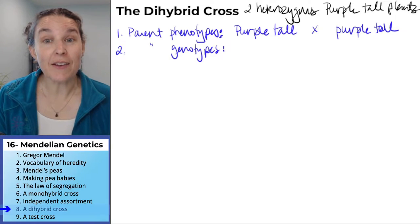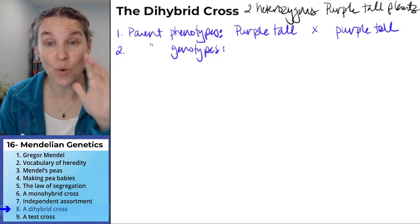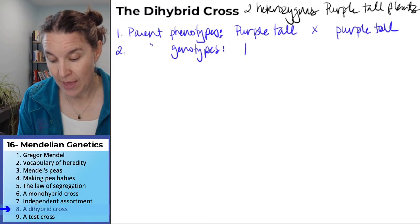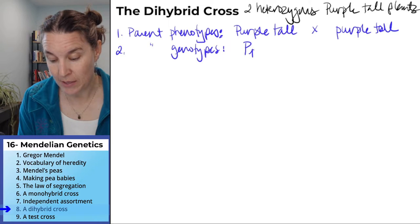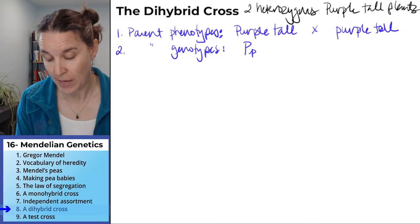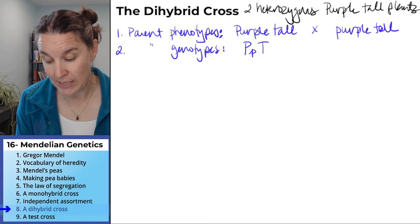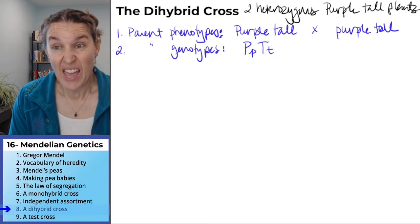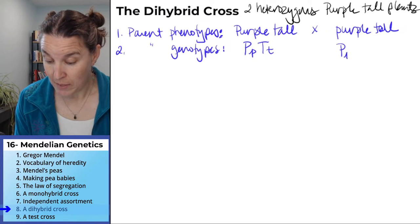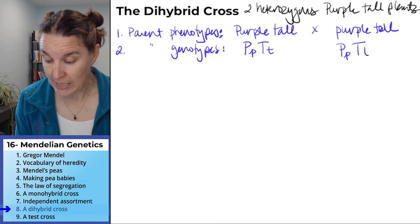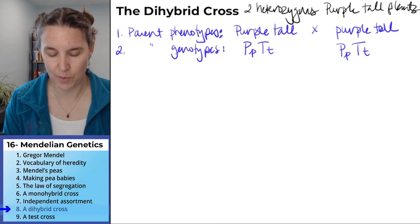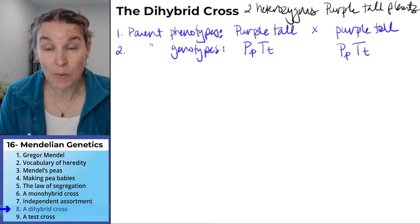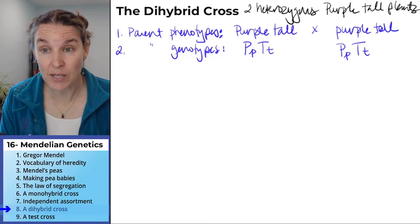Step two. What are their genotypes? Well, I tell you they're heterozygous. So that gives you all the information that you need. We will say, okay, then their big P, little p for the flower color gene and big T, little t for the height gene. And both of them are the same. So we have big P, little p, big T, little t. That was easy too, wasn't it?